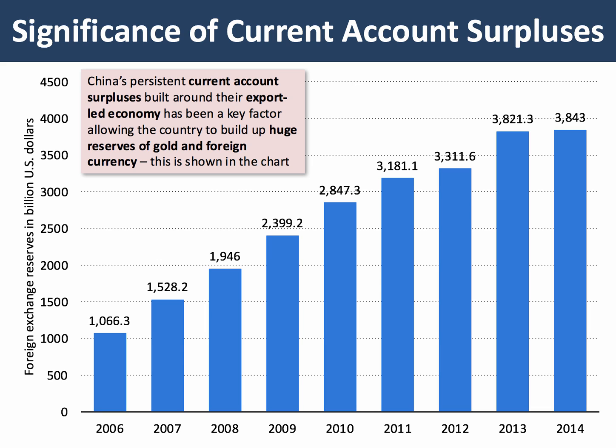Let's think about why a current account surplus matters. China has a current account surplus of around three percent of its GDP, but as a huge country that translates into enormous surpluses in terms of billions of dollars. One consequence of China's current account surplus is that they've been able to build up an enormous stock of foreign currency reserves — mainly in dollars but also in other currencies — with over three trillion dollars of foreign exchange as of 2015.